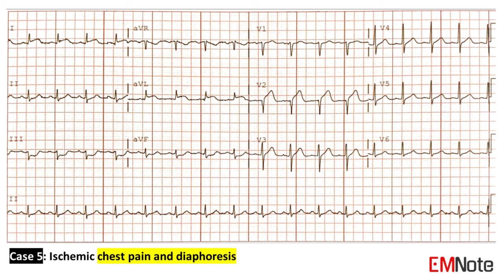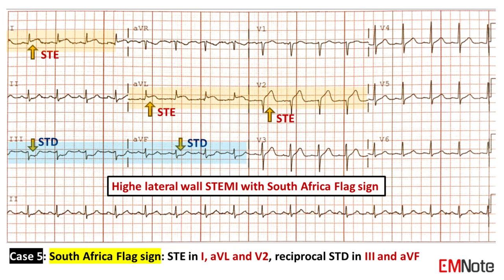Case 5: The patient presents with ischemic chest pain and diaphoresis. The ECG shows high lateral STEMI. High lateral STEMI is associated with a pattern of ST elevation caused by acute occlusion of the first diagonal branch of the LAD coronary artery. This ECG pattern is called the South Africa flag sign, which includes ST elevation in leads 1, AVL, and V2, and reciprocal changes best seen in leads 3 and AVF.